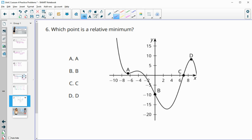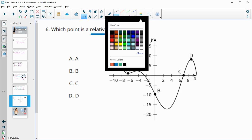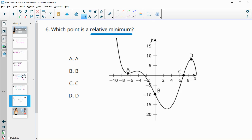Number six: which point is a relative minimum? Remember, that means that on either side of the point, the graph is higher than it. So it is the lowest point right next to itself. If we look here, A is the relative minimum because each side is above it.